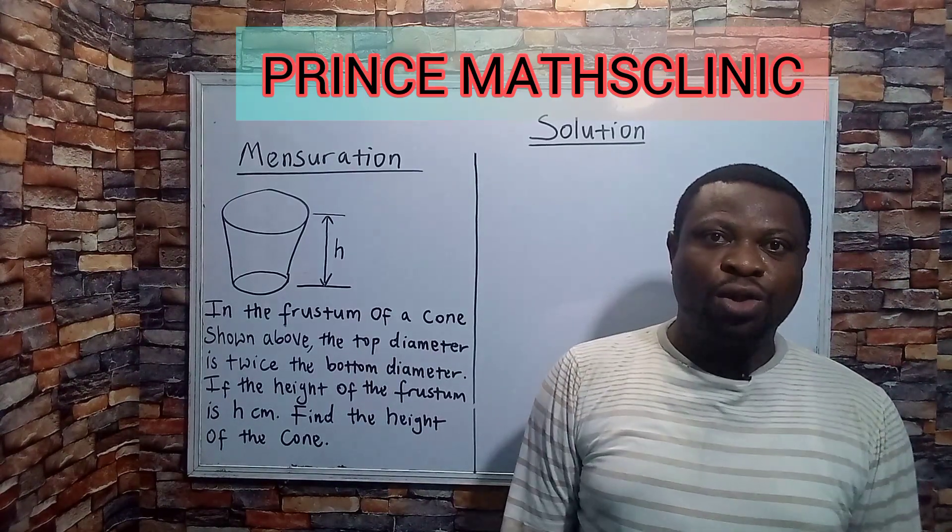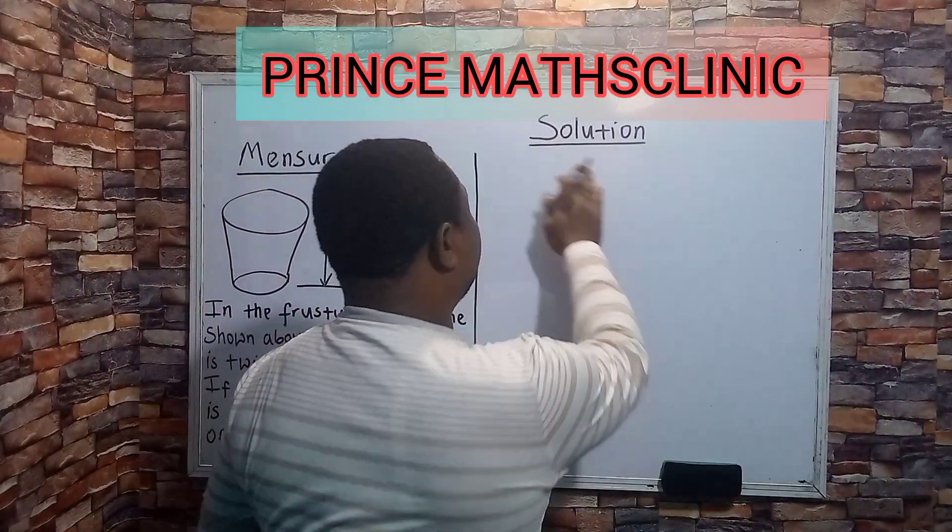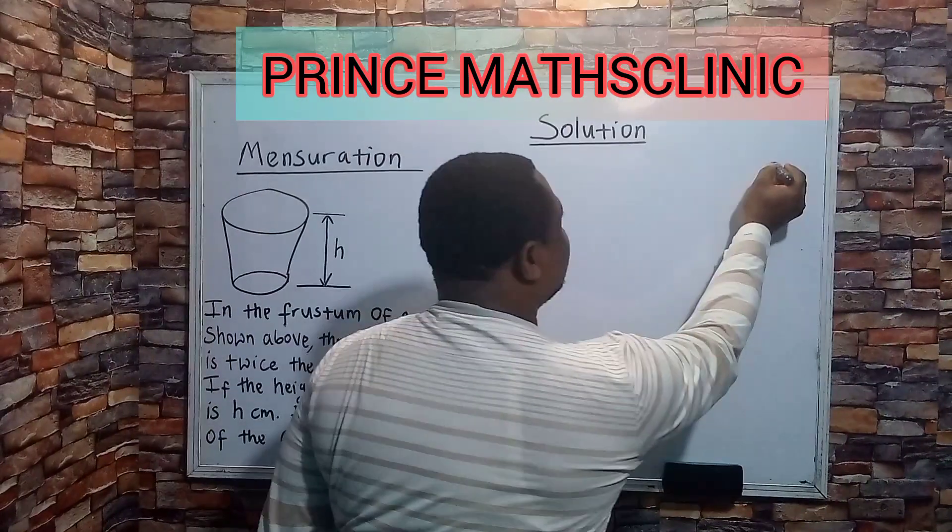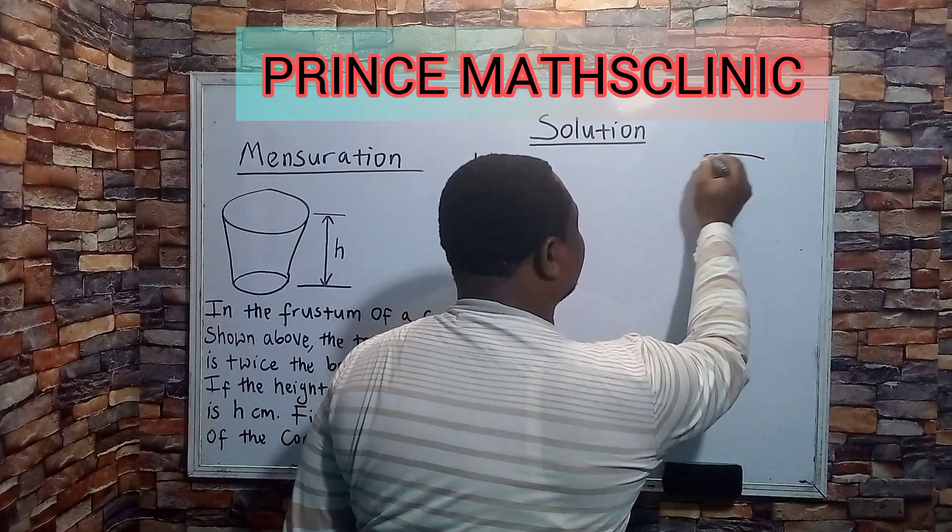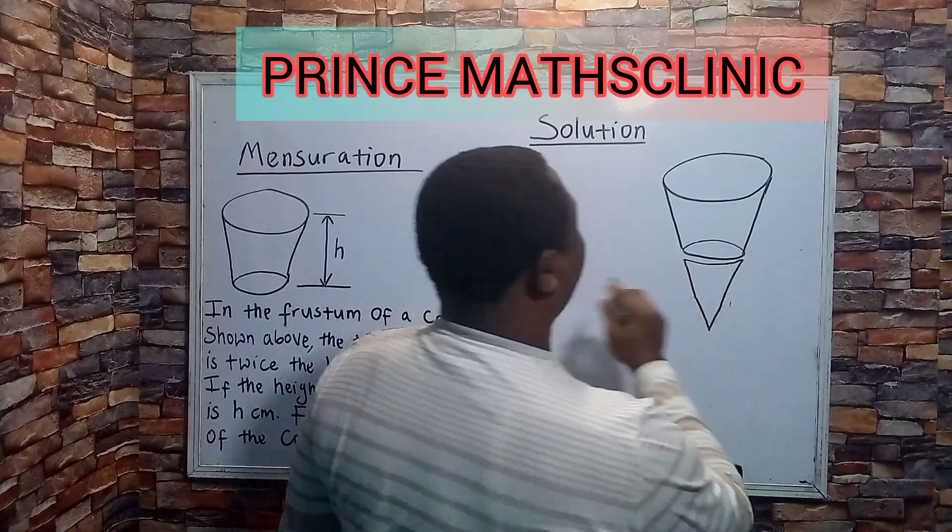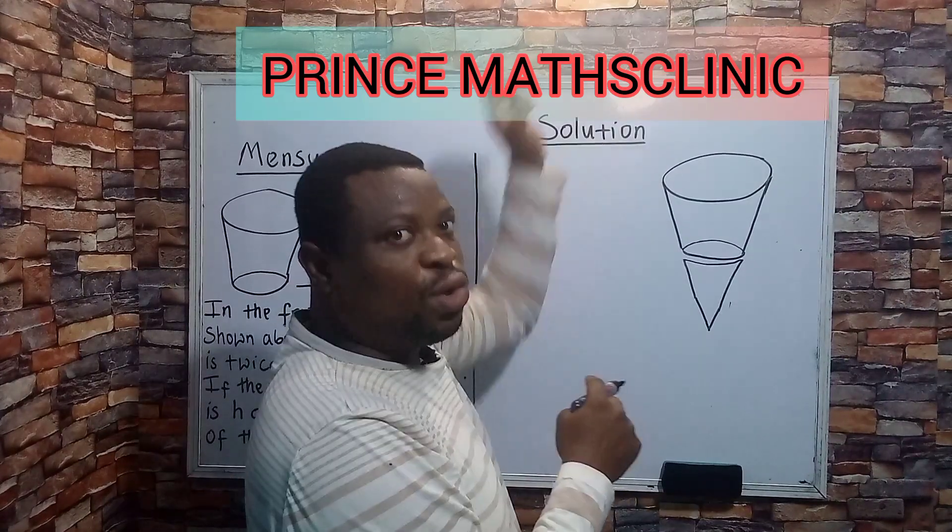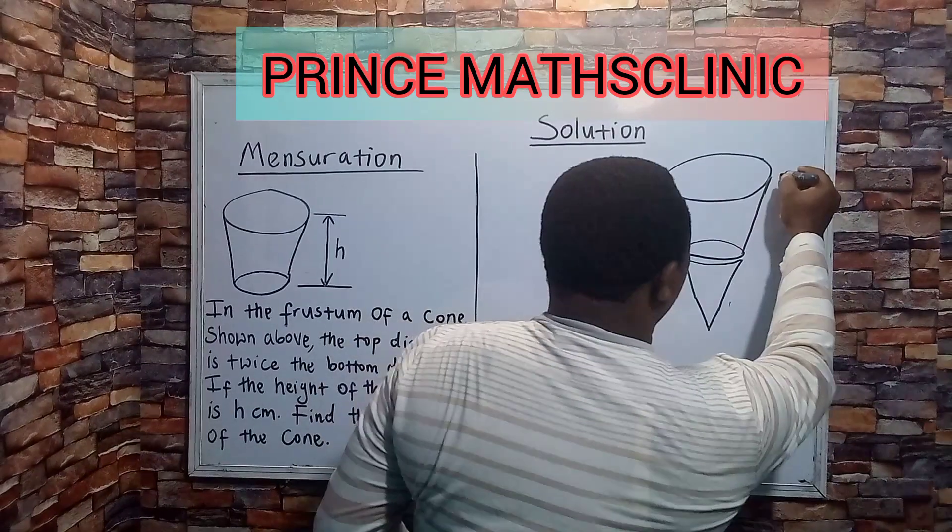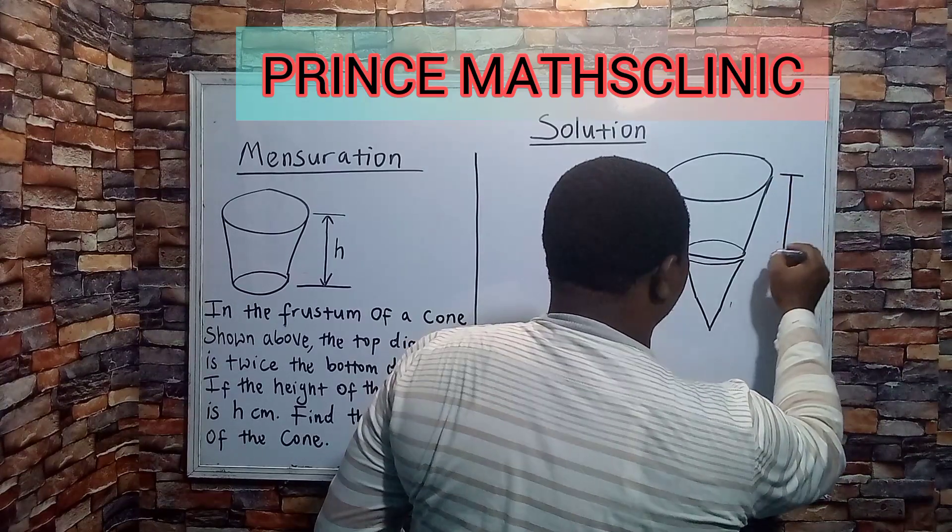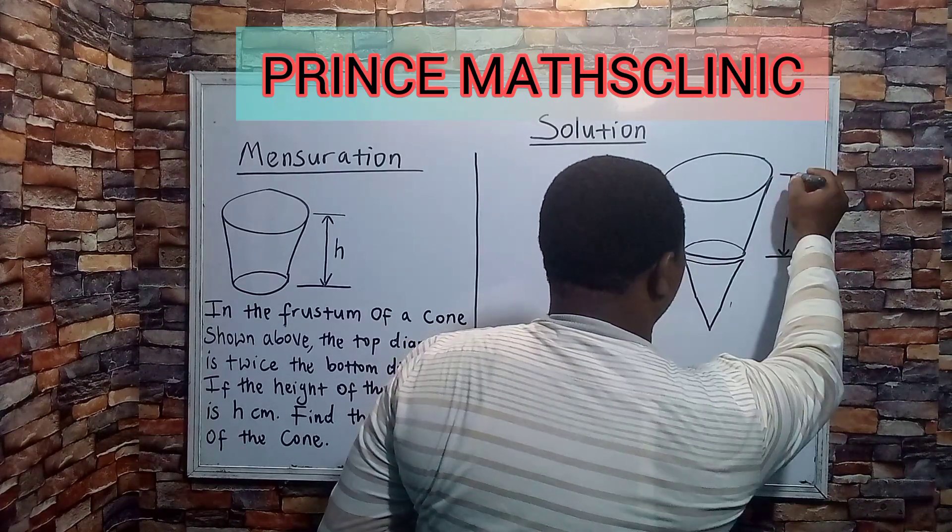Now, let's go right into the solution. I want to complete this cone. And this is what the cone should look like. It should look something like this. This is the frustum, the part that has been cut off. Now, from the question, we have been given that this is the height of the frustum.